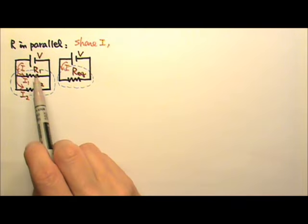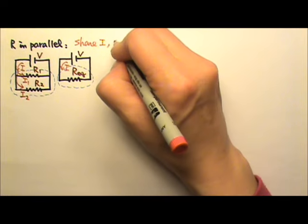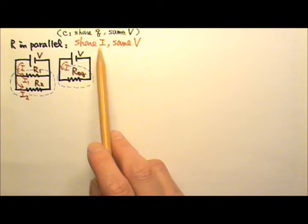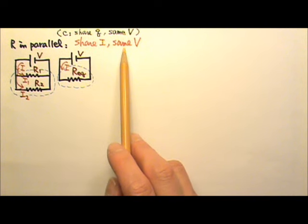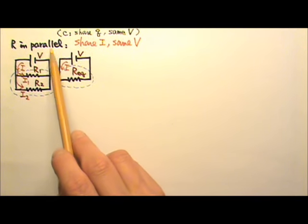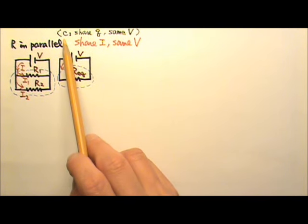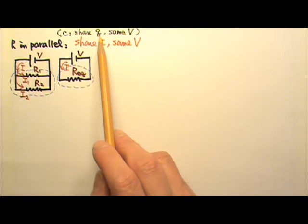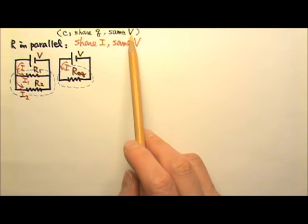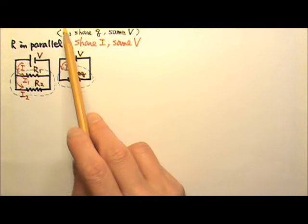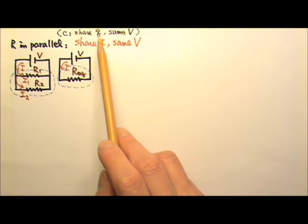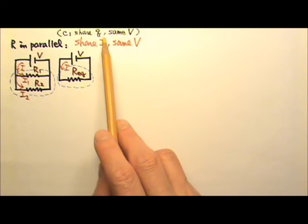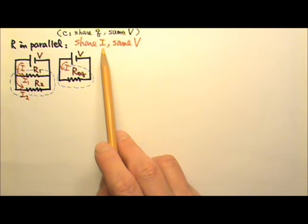And because they are in parallel, they have the same voltage. This is very similar to the case for capacitors in parallel. If we have capacitors in parallel, the parallel capacitors would share the charges, and they would have the same voltage. For capacitors, we talk about the charges on the plates, and for resistors, we talk about the charge flow, which is the current.